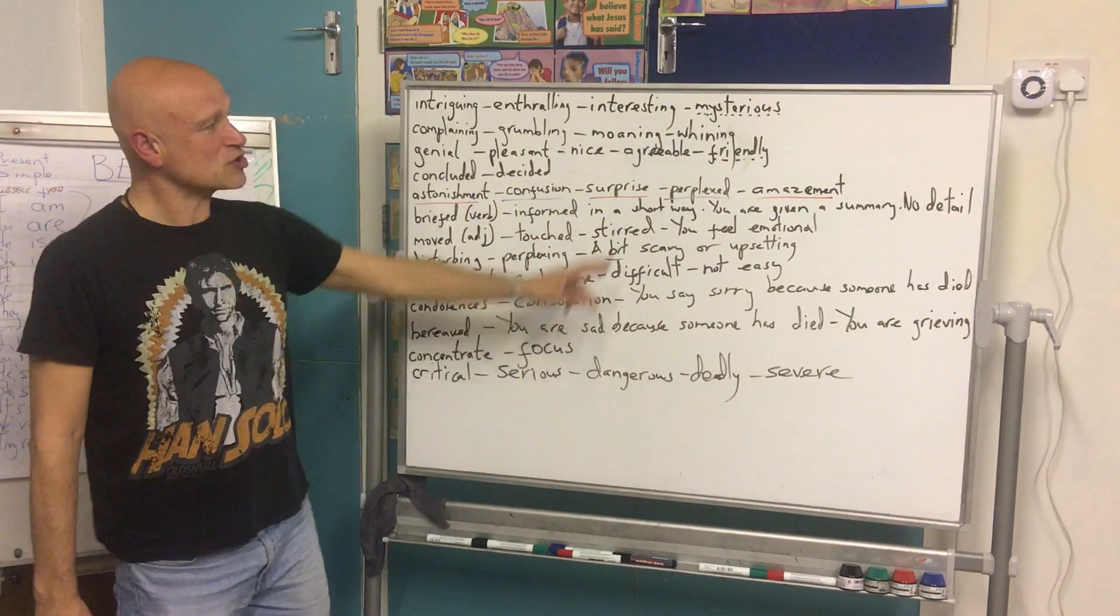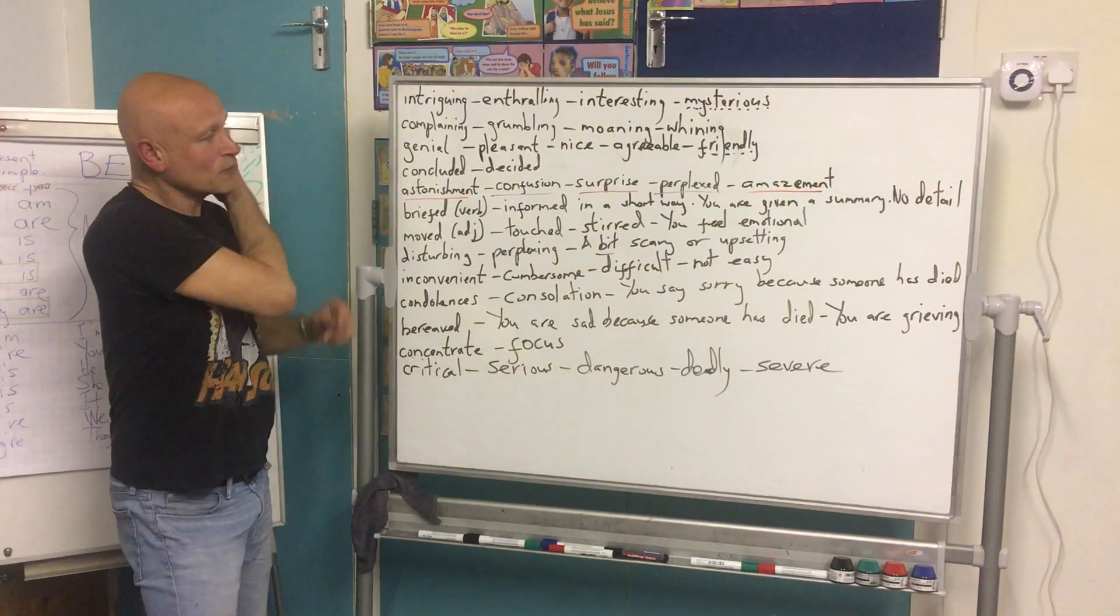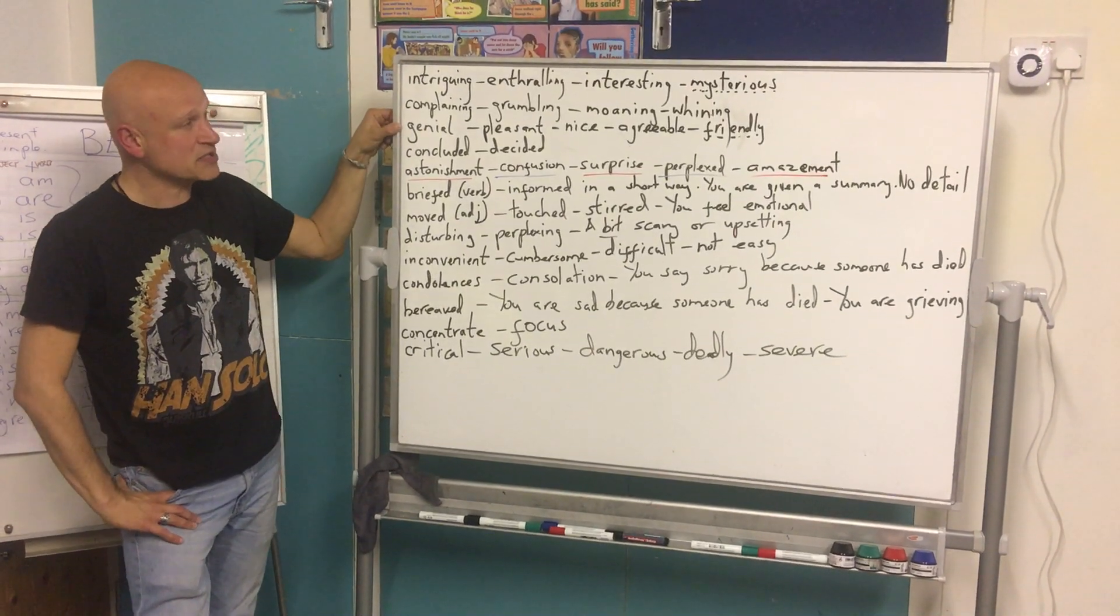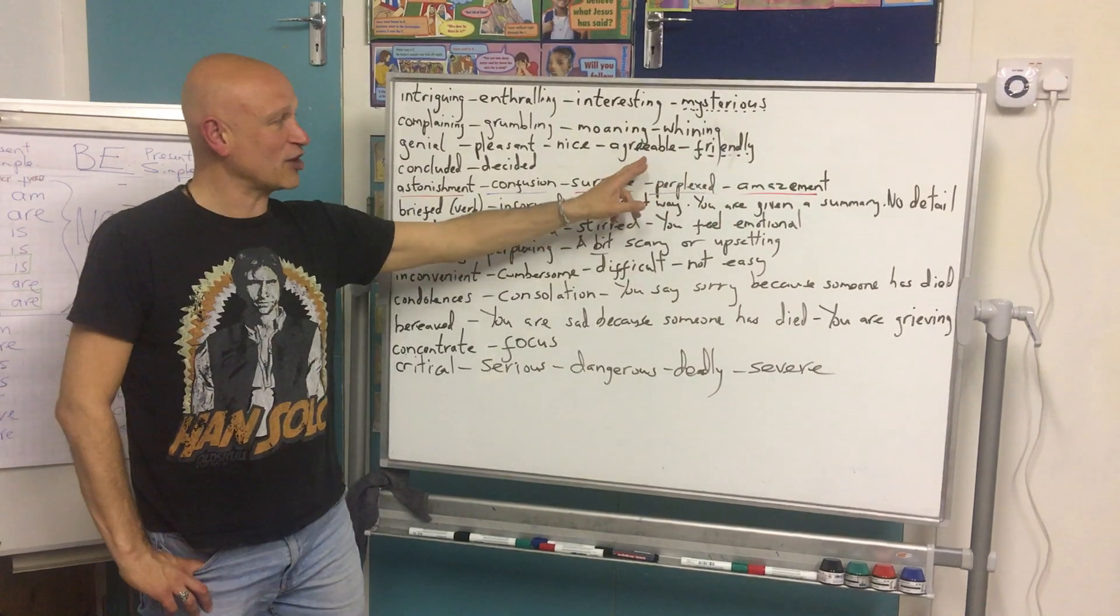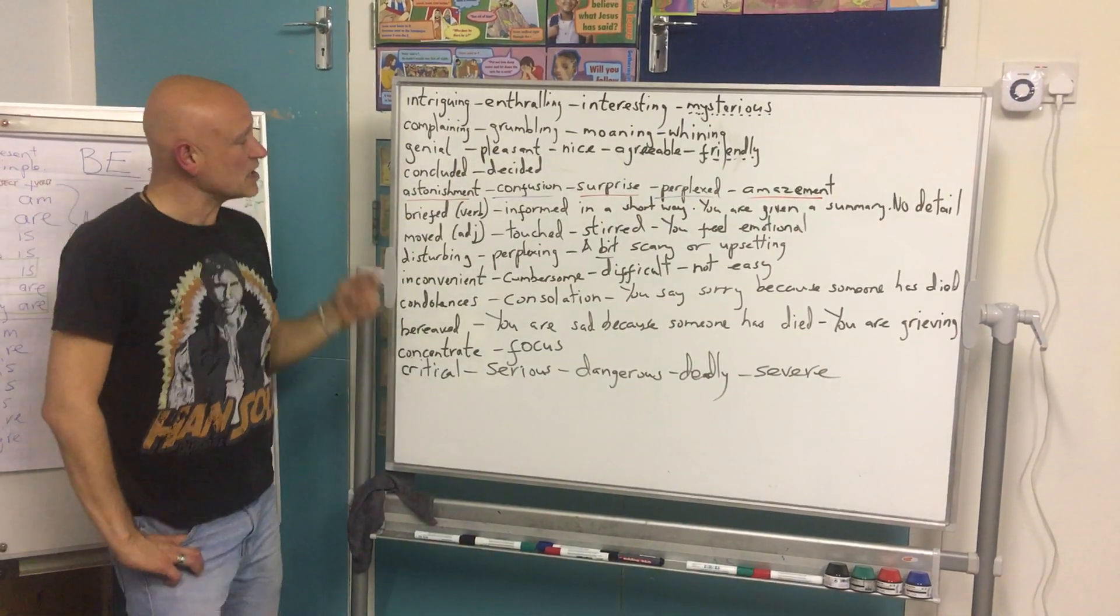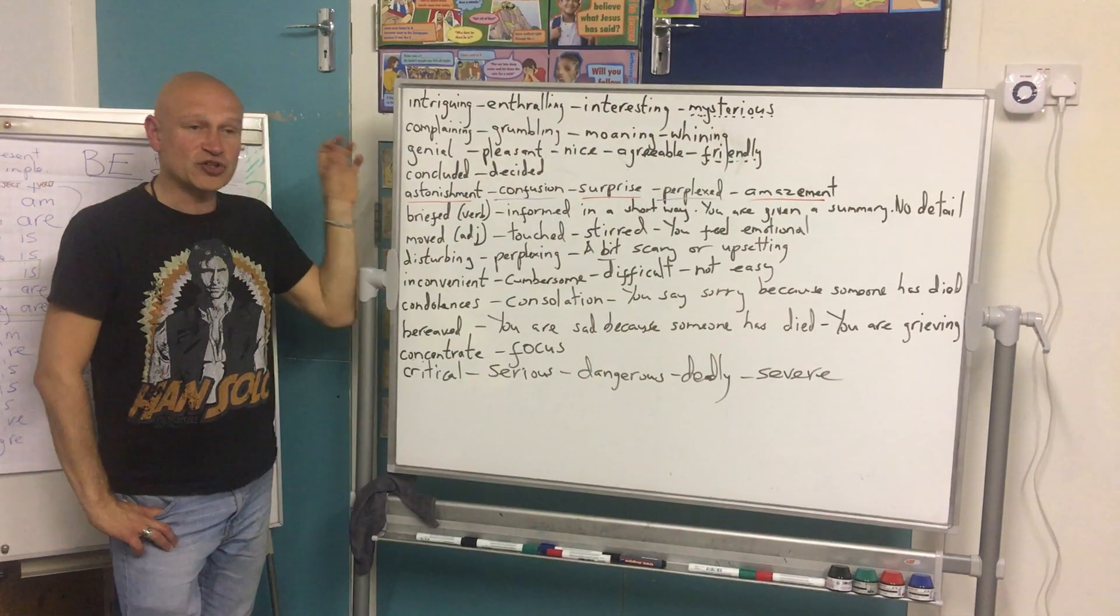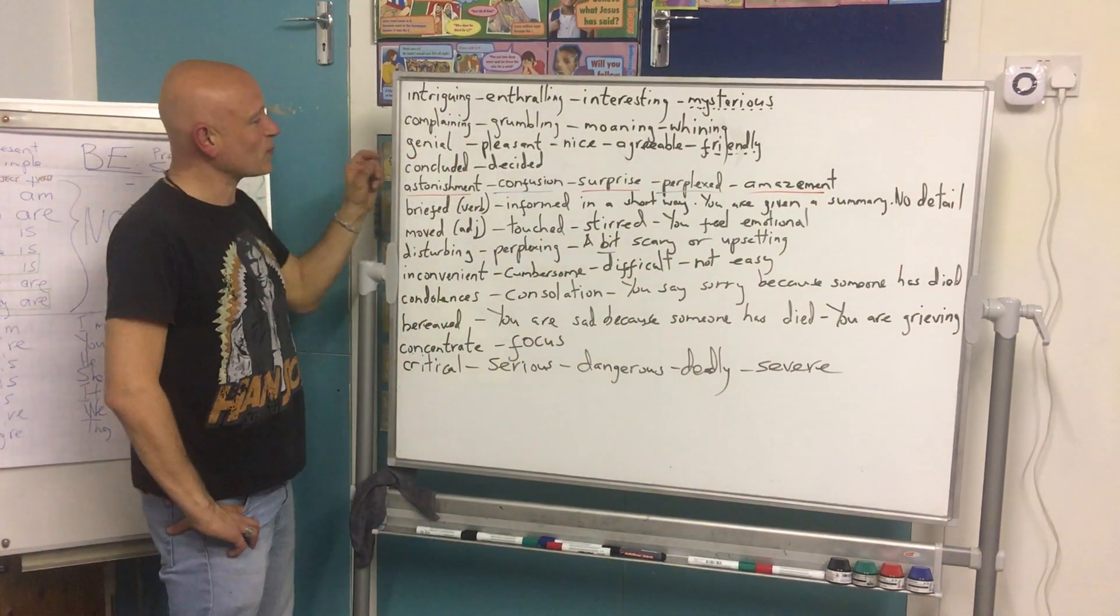If you are a genial person, the best synonym is friendly, but these are great: agreeable, nice, and pleasant. If you've concluded something, you've decided it. We'll talk about that later when we talk about your exam.